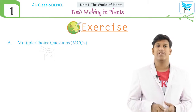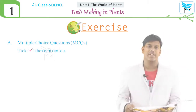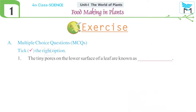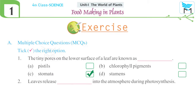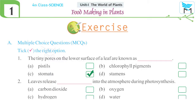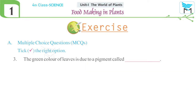Now let us discuss the exercise — multiple choice questions. First: the tiny pores on the lower surface of a leaf are known as — options: a) pistils, b) chlorophyll pigments, c) stomata, d) stamens. The correct answer is option c, stomata. Next question: leaves release blank into the atmosphere during photosynthesis — options: a) carbon dioxide, b) oxygen, c) hydrogen, d) water. The correct answer is option b, oxygen.